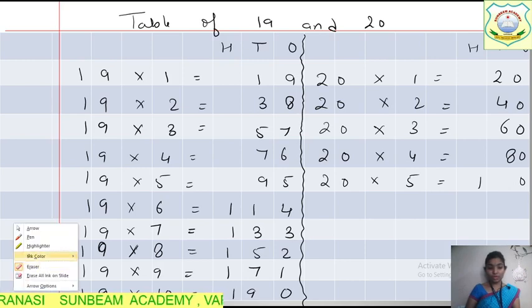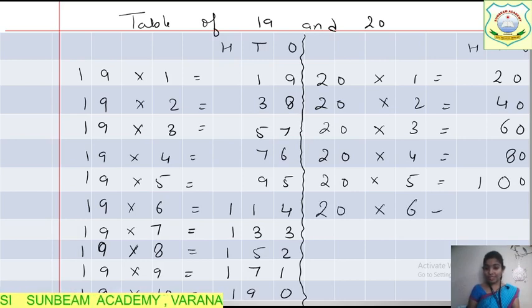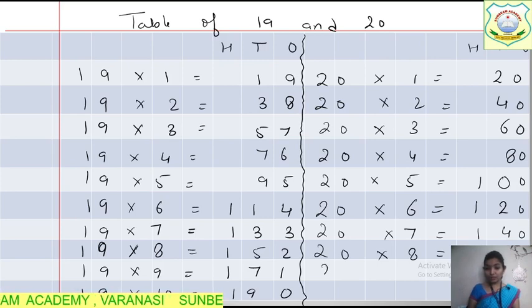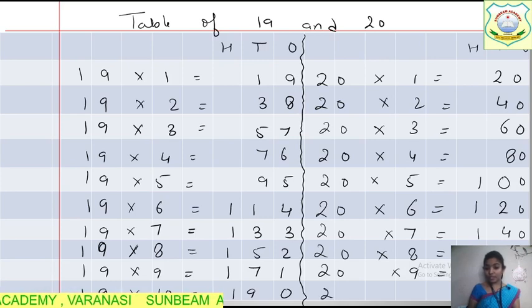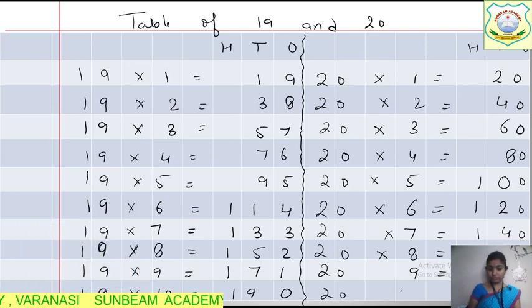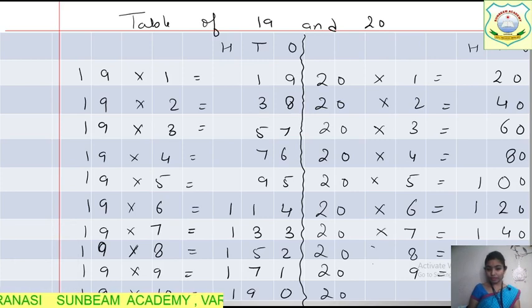You can learn today's table — homework: learn the tables. 20 sixes are 120. 20 sevens are 140. 20 eights are 160. 20 nines are 180. 20 tens are 200. That completes the table of 20.